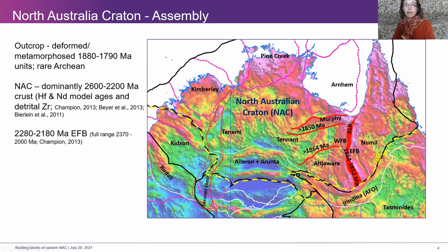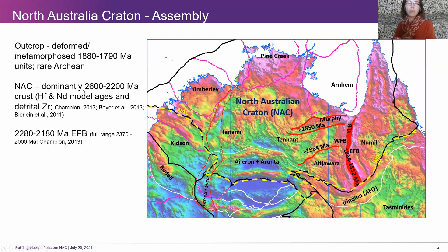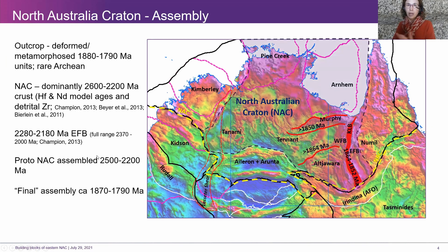The North Australian Craton is outlined here in yellow, which I like to show throughout this image because it really shows just how vast this block of crust is. It has some other fairly competent blocks like Kimberley, Pine Creek, and Arnhem, and then some less well-defined terrains. Most of the outcrop is 1880 to 1790, but we have evidence from model ages — that Dom will talk about — that there's a lot of late Archean to early Proterozoic crust through this area. Very consistent ages across much of the NAC until we get to the eastern fold belt, Numel, and to the east, where we see a change that Dom will talk about.